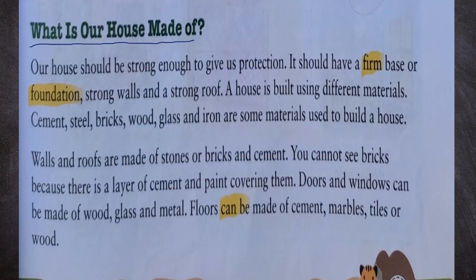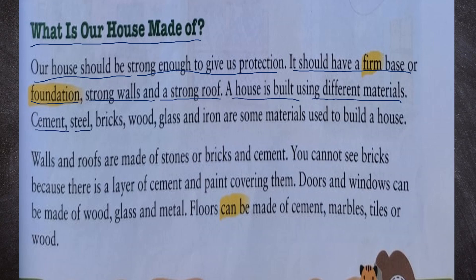What is our house made of? A house should be strong enough to give us protection. It should have a firm base or foundation, strong walls, and a strong roof. A house is built using different materials: cement, steel, bricks, wood, glass, and iron. Walls and roofs are made of stones or bricks and cement.